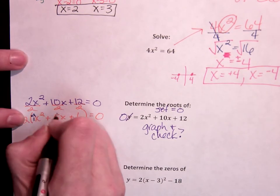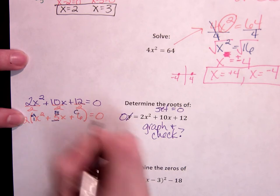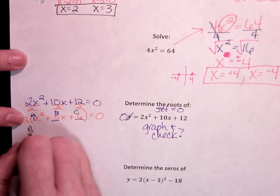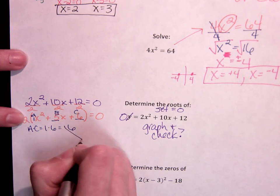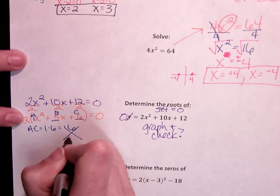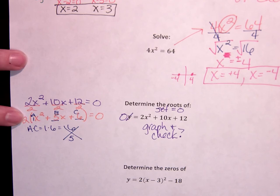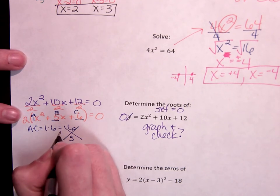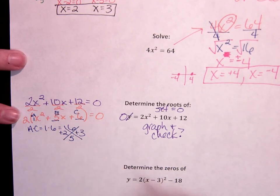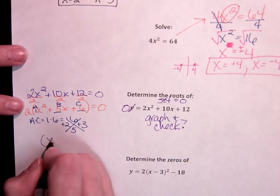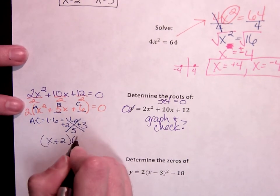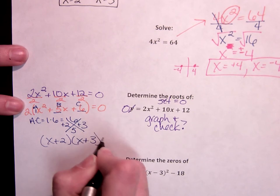a is 1, b is 5, c is 6. a times c, 1 times 6. And now I need it to equal positive 5. So now we're going to use positive 2 and positive 3. And we can write x plus 2 times x plus 3 equals 0.